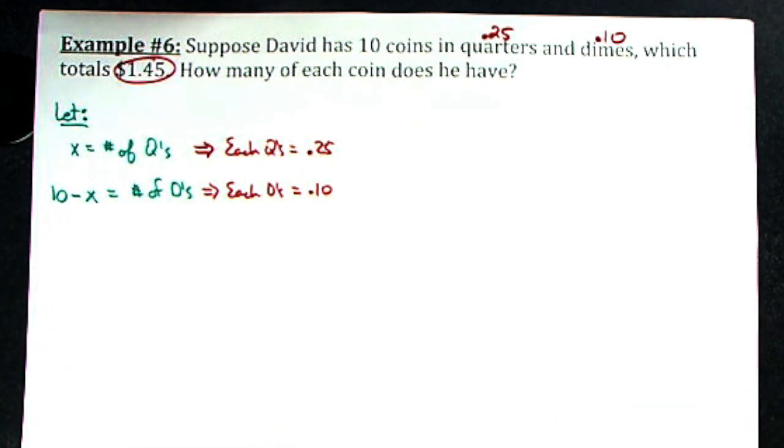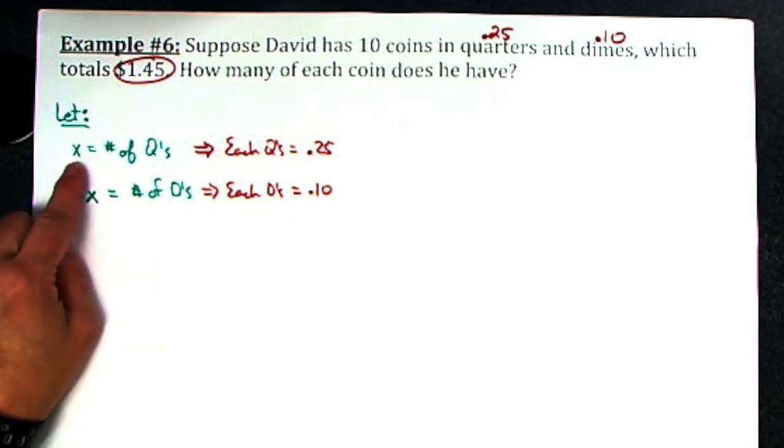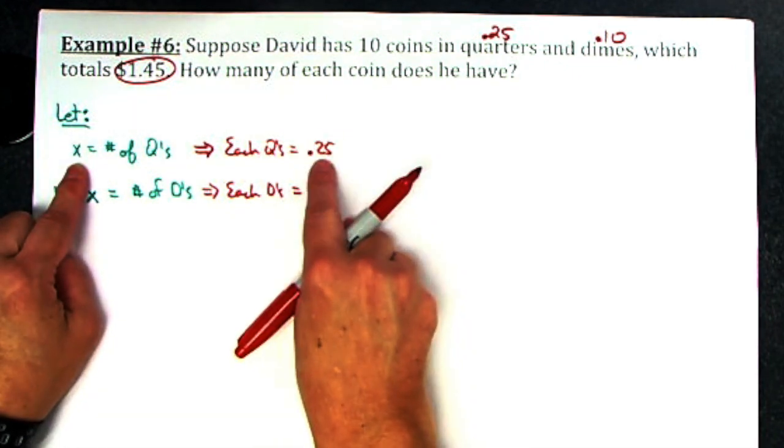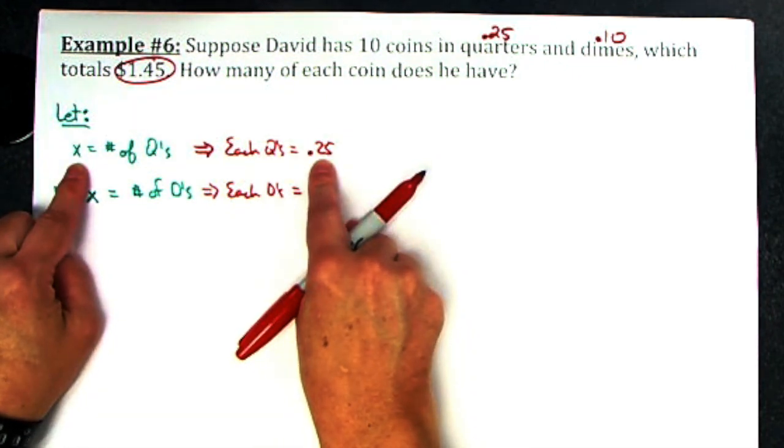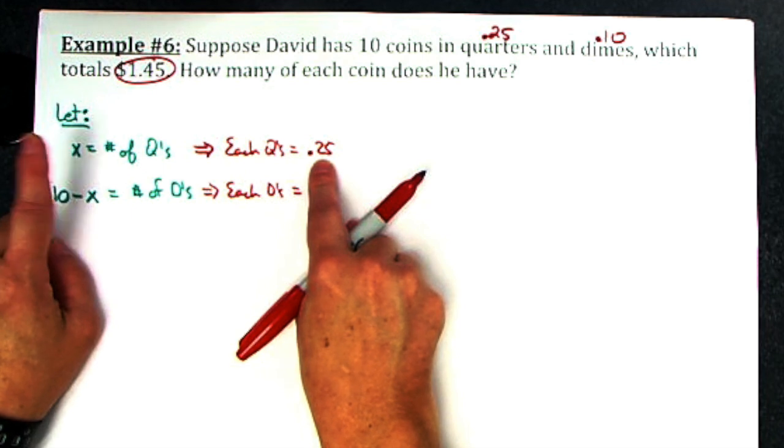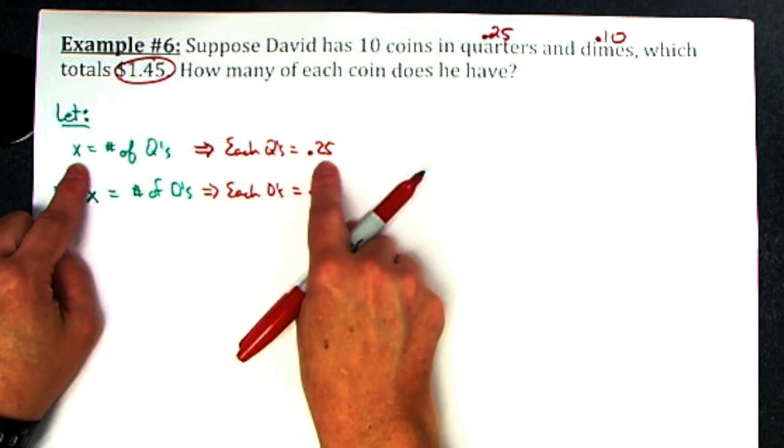If I wanted to know how much money x quarters are, I would take x times 0.25, because if I had 10 quarters, 10 times 0.25 would tell me how much money. If I had six quarters, six times 0.25 would tell me how much money.